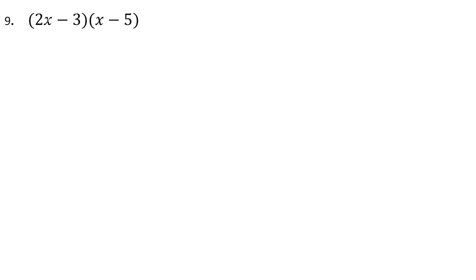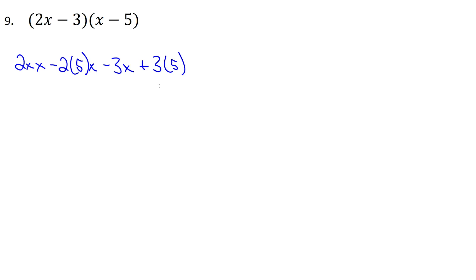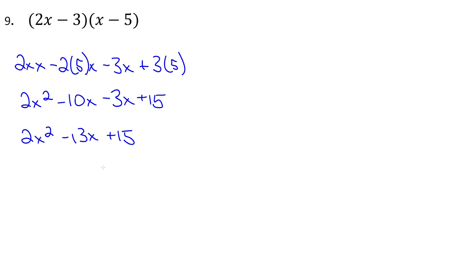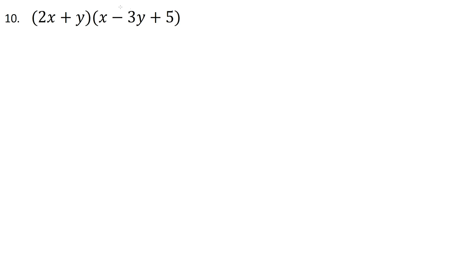We've got another binomial times binomial. Starting with 2x, we multiply through x and -5, then do the same with -3. We'll get four terms total: 2x times x, then 2x times -5 gives -10x, then -3 times x gives -3x, then -3 times -5 overall is positive 15. Cleaning up: 2x² - 10x - 3x + 15. Combining like terms -10 and -3 gives 2x² - 13x + 15.